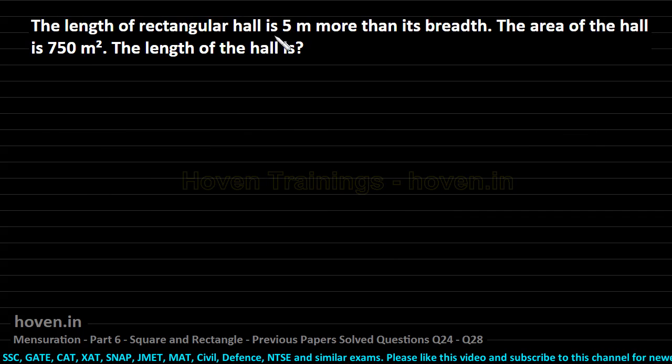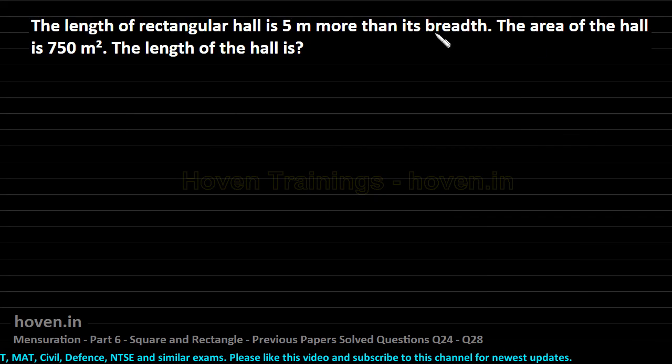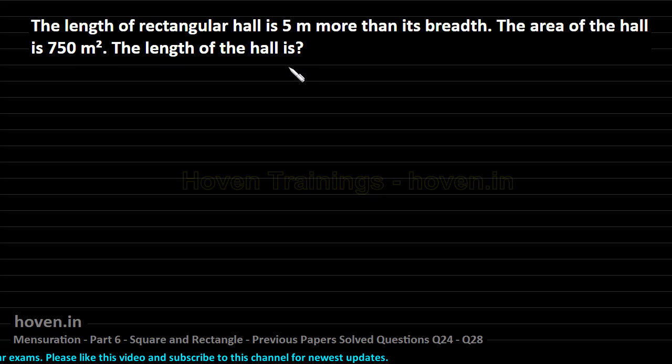Let us move on to our next question now. The length of a rectangular hole is 5 meter more than its breadth. The area of the hole is 750 and we have to ultimately find the length of the hole. Let the length be L. If the length is L, then the breadth is going to be L minus 5.